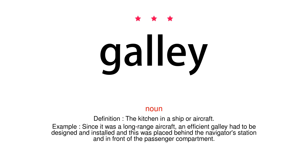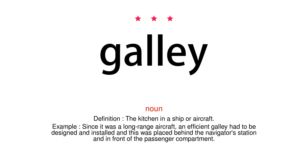Noun. Definition: The kitchen in a ship or aircraft. Example: Since it was a long-range aircraft, an efficient galley had to be designed and installed, and this was placed behind the navigator's station and in front of the passenger compartment.